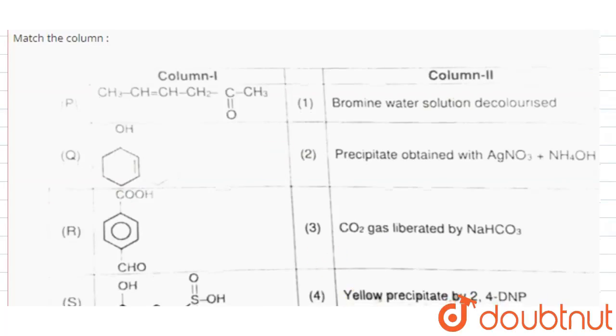So in column 1, in the first case, we have an alkene group and also a carbonyl group.